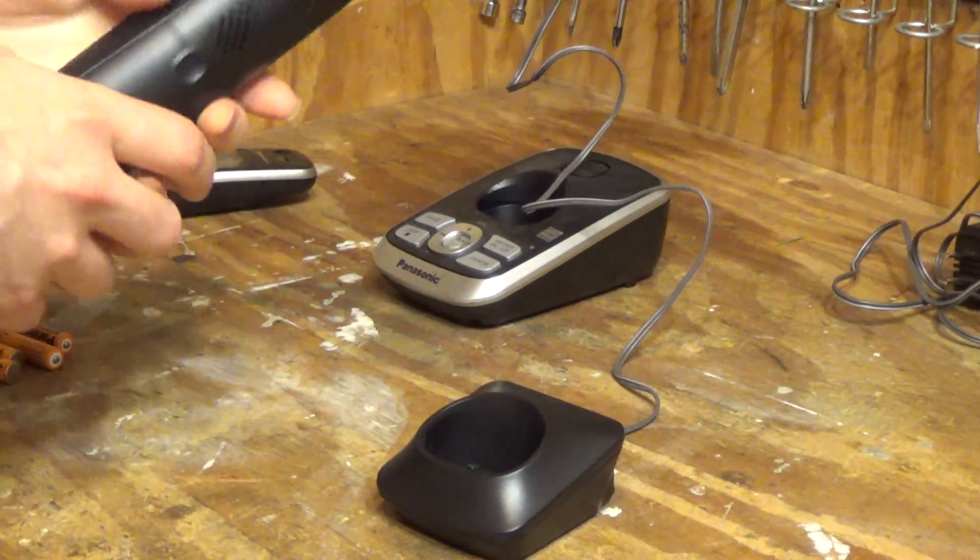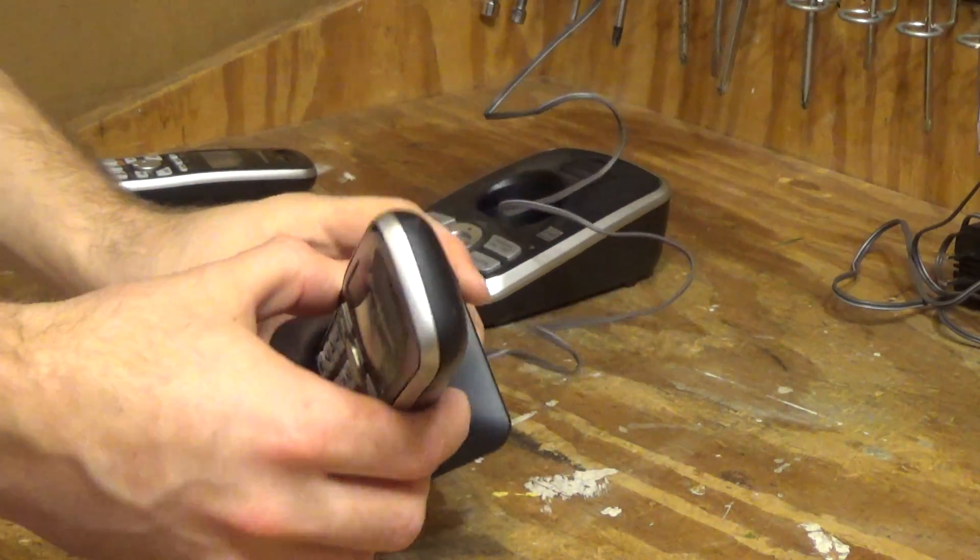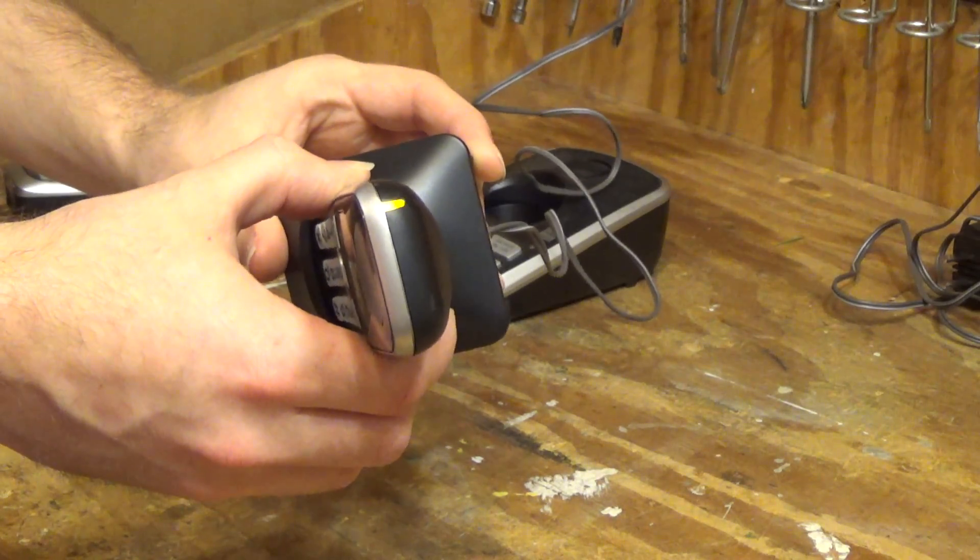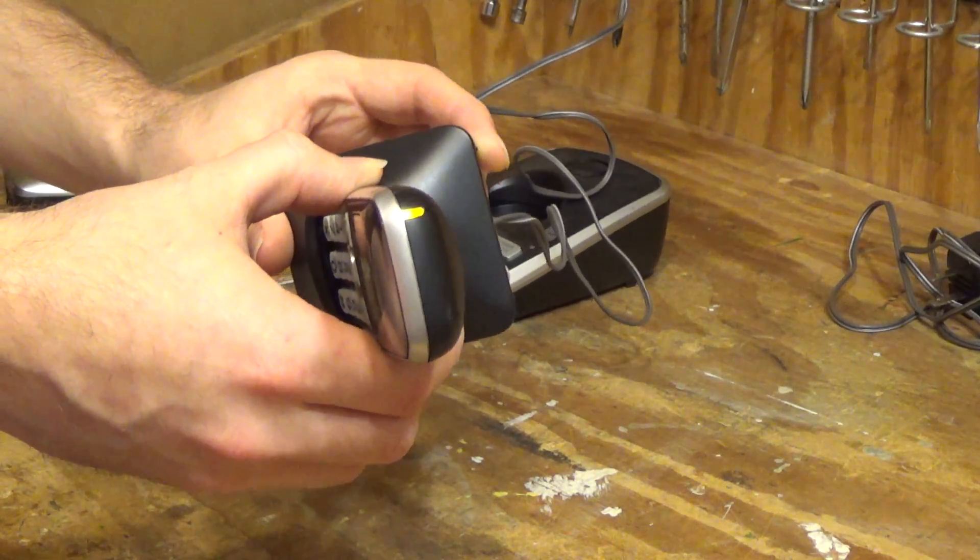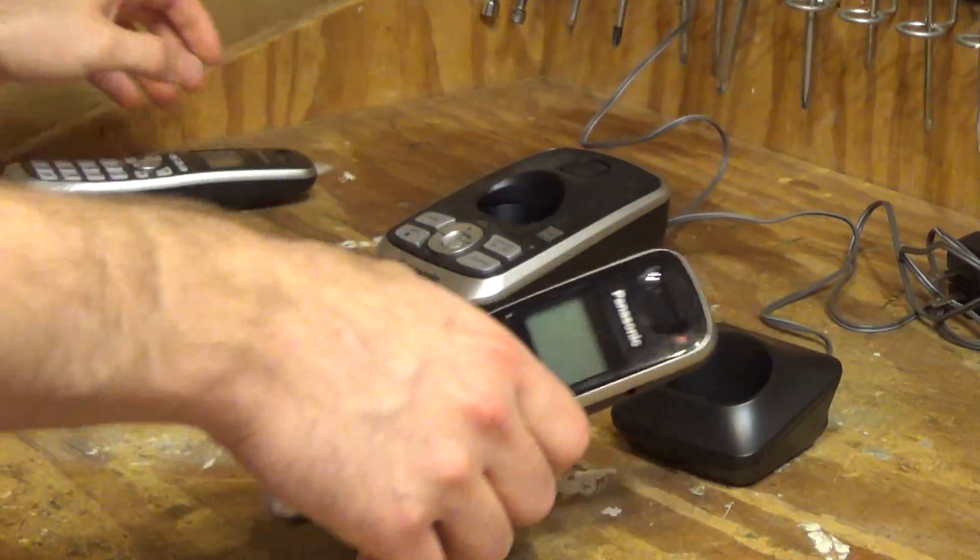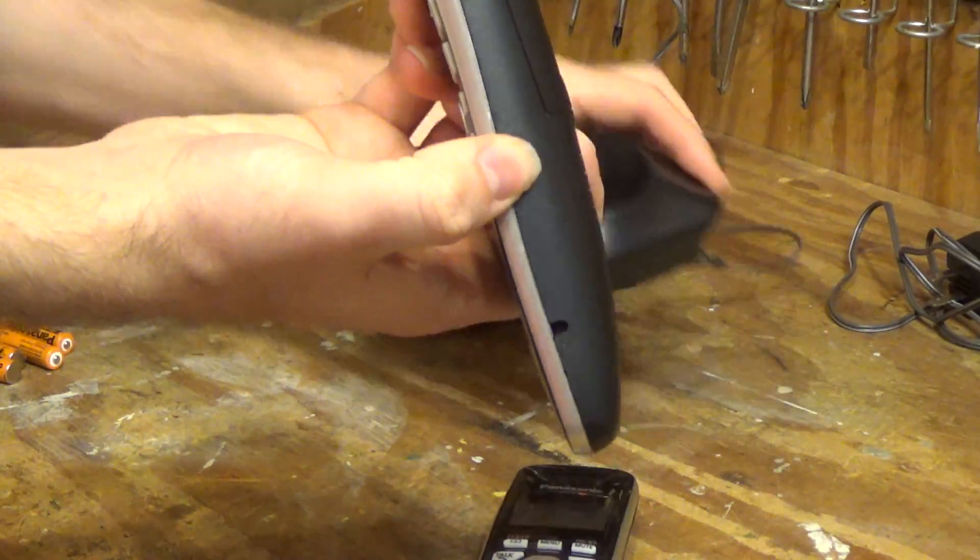So just to demonstrate the problem here. Of course now it'll work but you can see that the charge light is very flickery and that indicates that this is not getting a good charge. So the other handset's like that too.